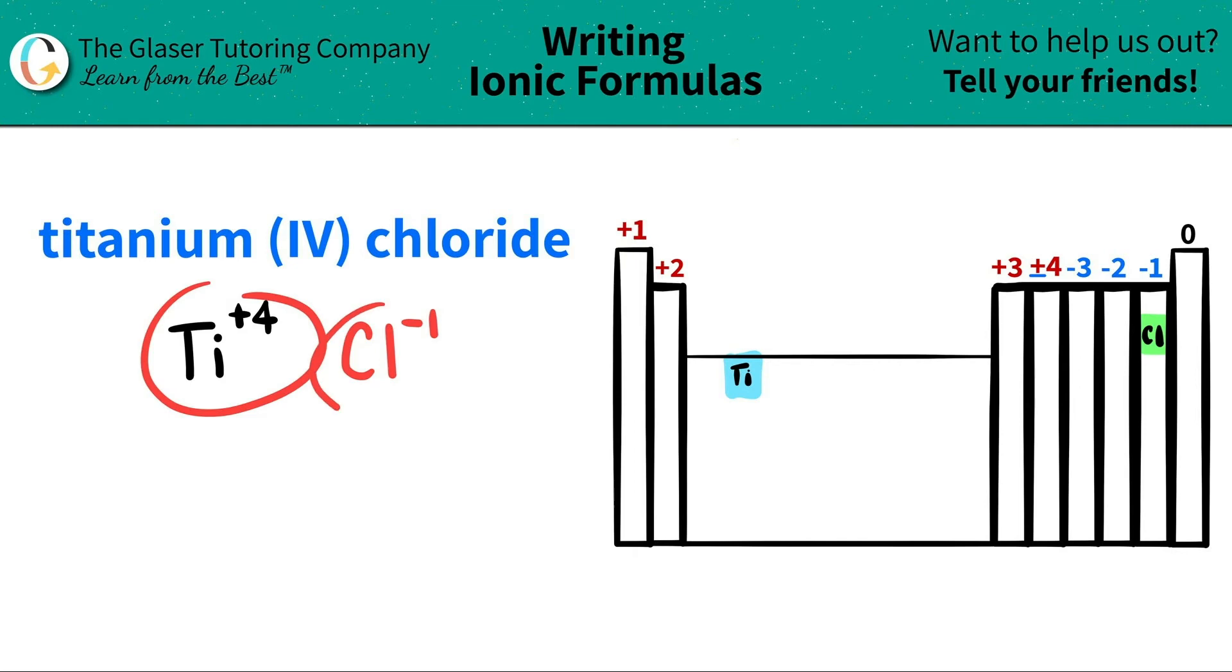Now I have the two components. So we do this little trick where we take the charges and we criss-cross them down to say how many of each component I need. So this plus four criss-crosses down, telling me that I need four chlorines. And then this negative one criss-crosses down, telling me that I need one titanium. When you do this criss-crossing, don't worry about the charges anymore. Just focus on the subscripts.